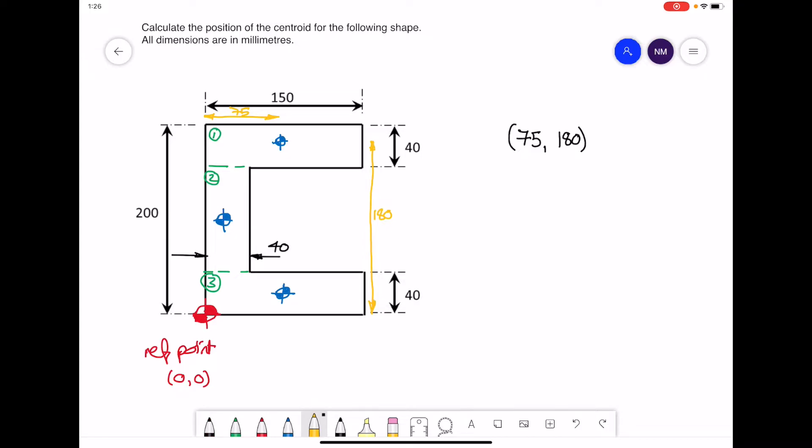For the second rectangle, the distance across to that center will be 20, and the height to that location will be 100. Writing that down, we have 20, 100. For the center for the third rectangle, it again will be 75 across, and the height in this example will be up 20. Write down the coordinates, 75 and 20.